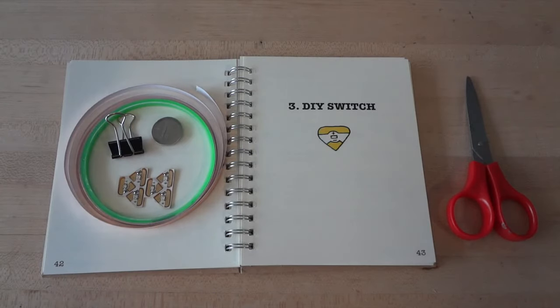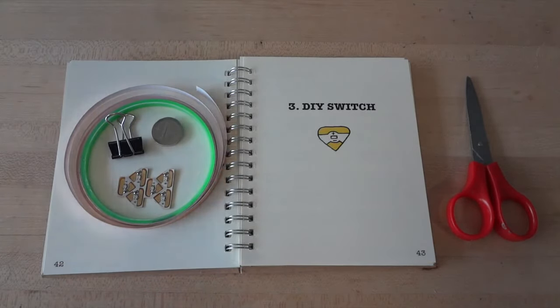For this tutorial, you will need one LED sticker, a coin cell battery, a binder clip, copper foil tape, and scissors to cut your tape.